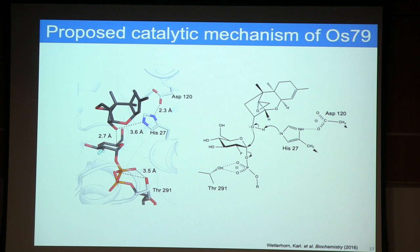Published structures of other plant UGTs glycosylating other substrates also had an aspartate and a histidine at these positions. Combined with the finding that substituting these residues to alanines eliminated all activity, we propose this as the catalytic dyad. Our proposed mechanism starts with deprotonation of the hydroxyl by the nitrogen on histidine 27; the resulting nucleophilic oxyanion attacks the C1 carbon, resulting in glycosylated trichothecine and release of UDP. I also highlight threonine 291, which is 3.5 angstroms from oxygens on the beta phosphate of UDP.